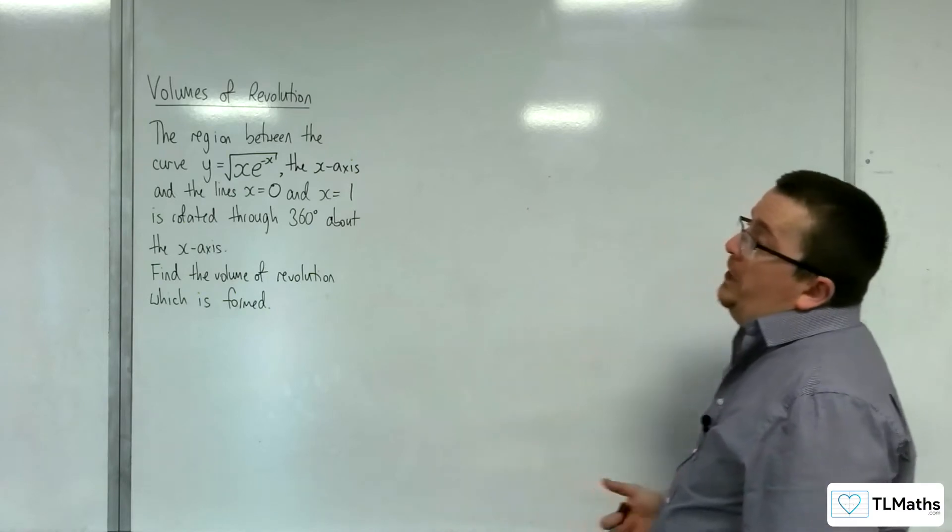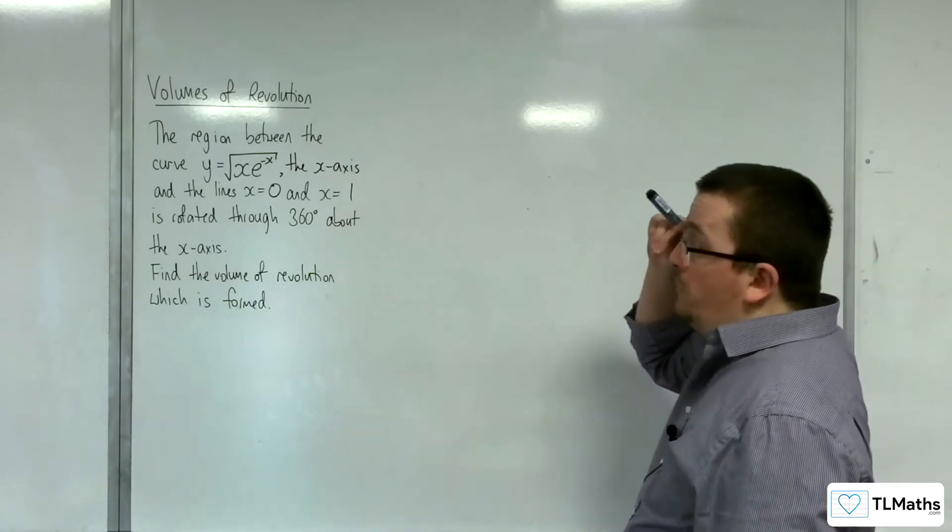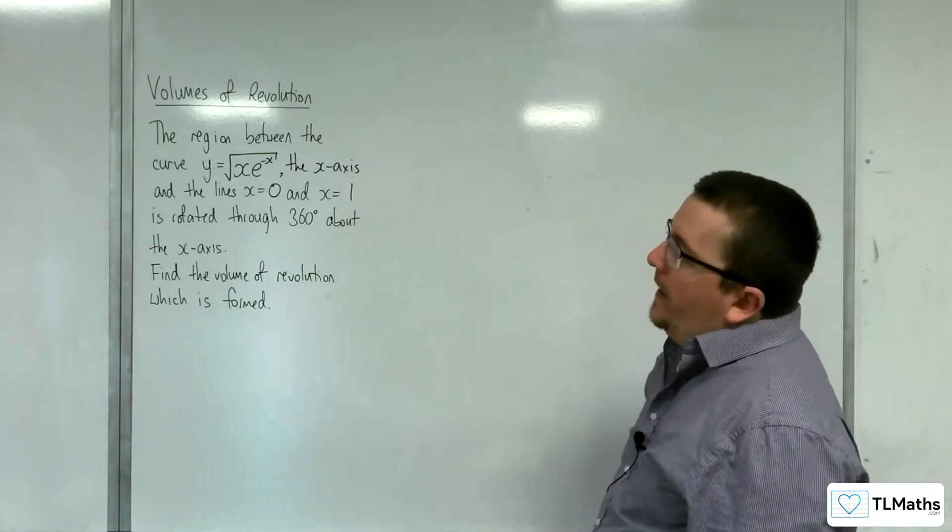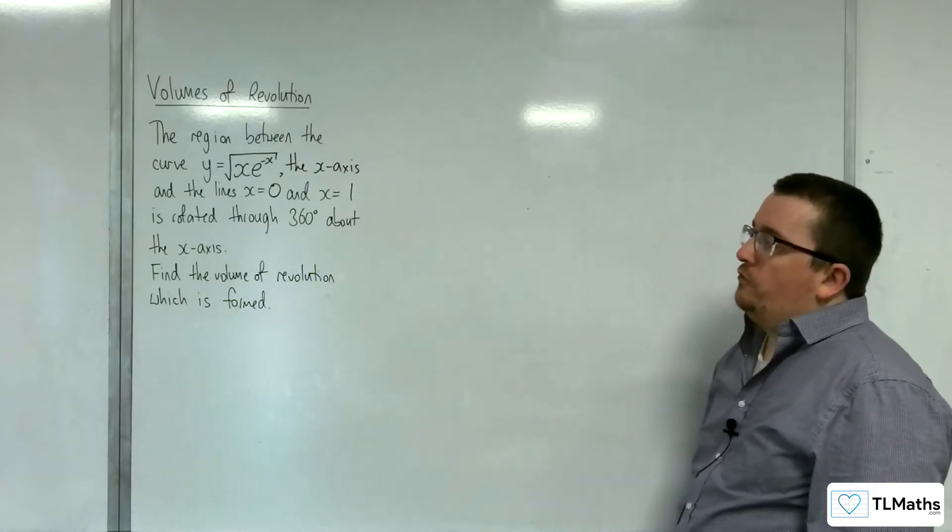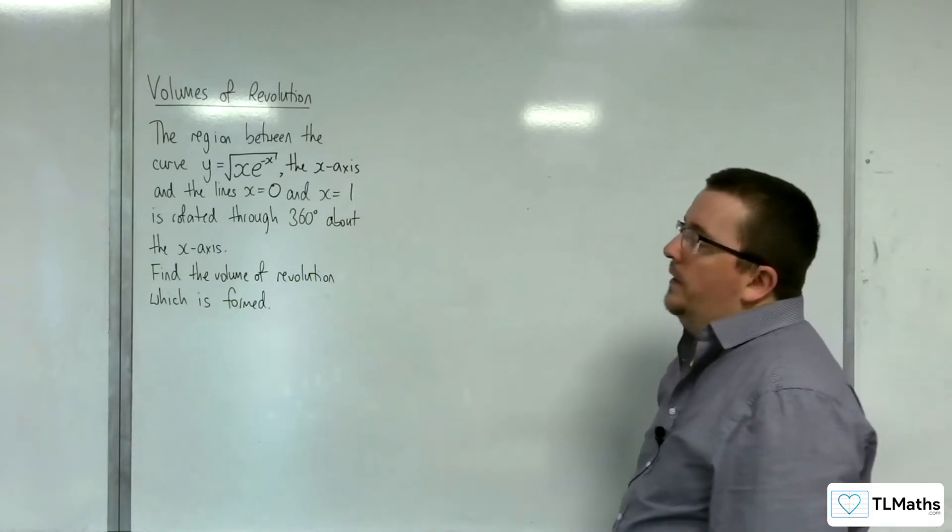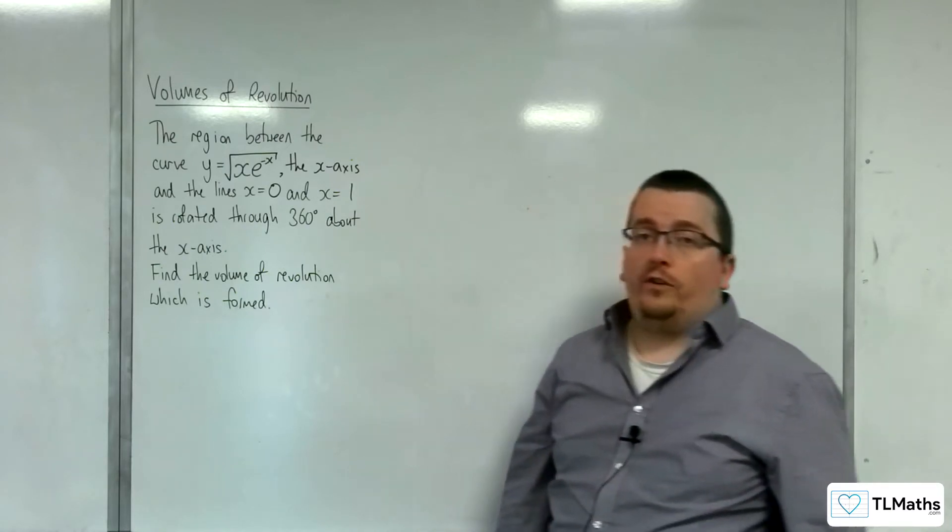In this video, the region between the curve y equals the square root of x times e to the minus x, the x-axis, and the lines x equals 0 and x equals 1, is rotated through 360 degrees about the x-axis. Find the volume of revolution which is formed.